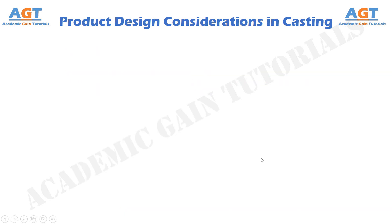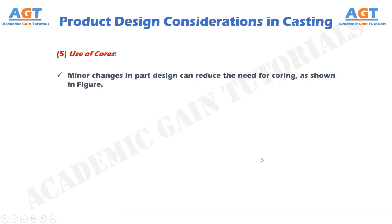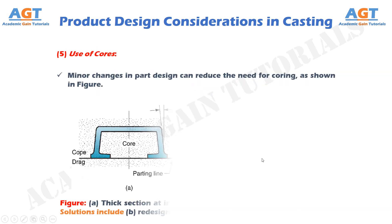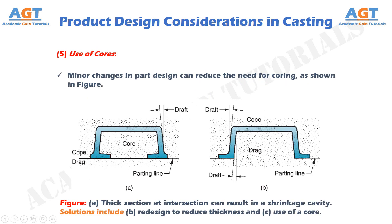Number 5: Use of Cores. Minor changes in part design can reduce the need for coring, as shown in these figures.